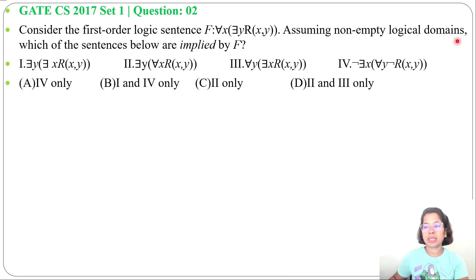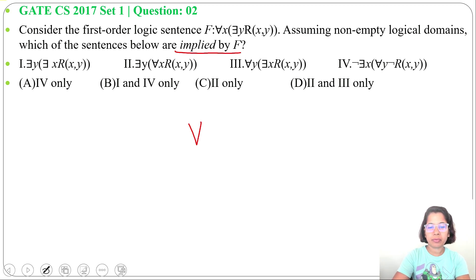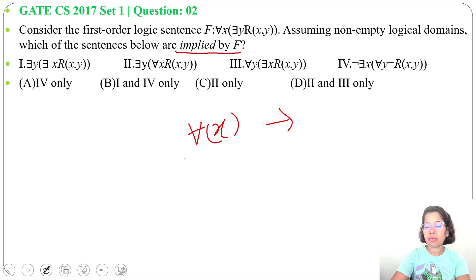Assuming a non-empty logical domain, which of the sentences below are implied by F? If for all X something is true, then that should also be true for there exist X — meaning for all X implies there exist X.